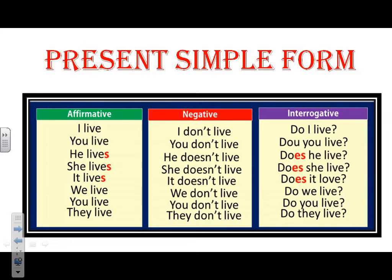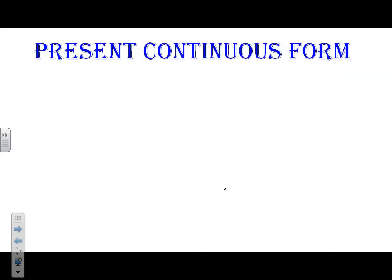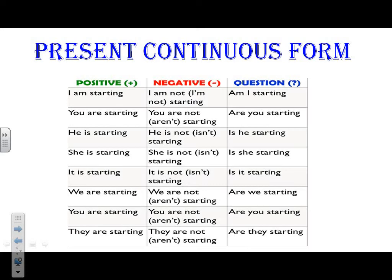Now the Present Continuous form. We form it with verb to be plus verb + ING. Verb to be means am, is, or are, plus verb ING. So in the positive or affirmative: I am starting, you are starting, he is starting, and so on.